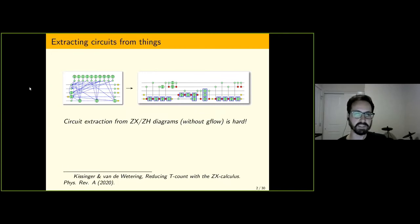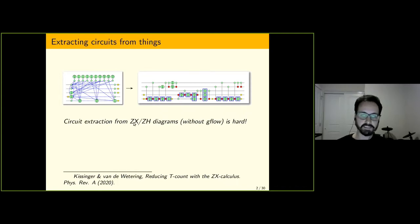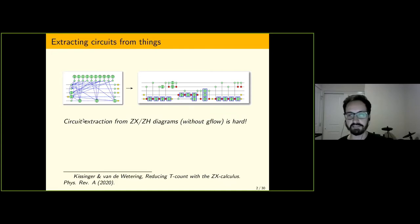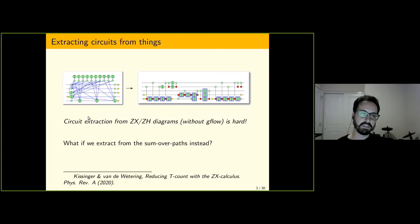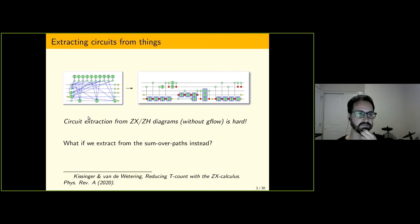For example, these are some images I took from a circuit optimization paper by John and also Alex. The thing is, circuit extraction is hard in multiple ways. As we already saw earlier on in the week in John's talk, it's hard in a complexity-theoretic sense, but it's also hard just to figure out how we can actually extract a circuit from a general ZX or maybe a ZH diagram.